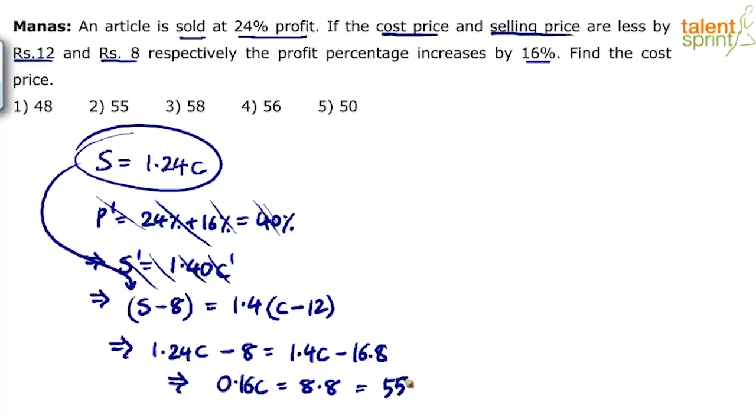55 is the answer. Cost price is 55. That's what we are required to find. Cost price is going to be 55. So 55 is there in the options? Yes. Option 2 is the answer.